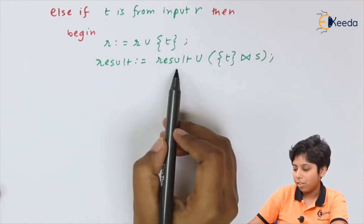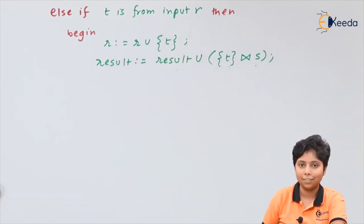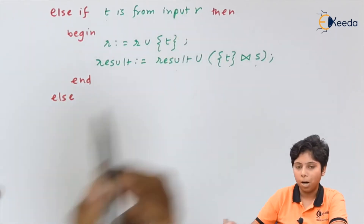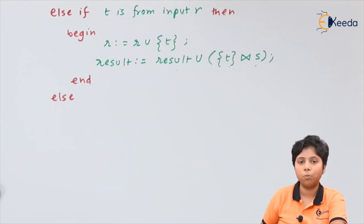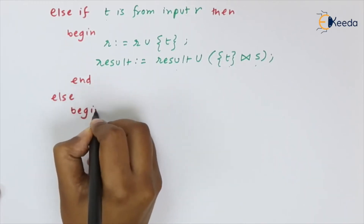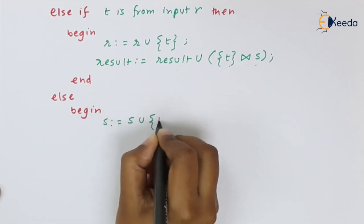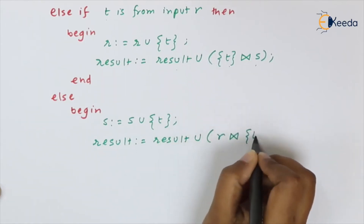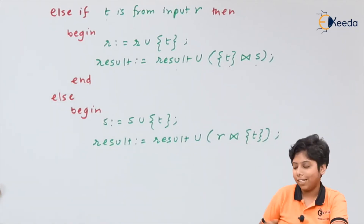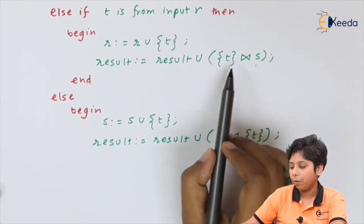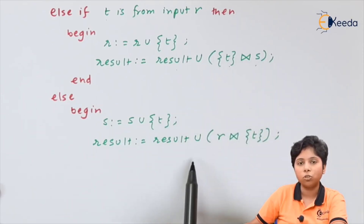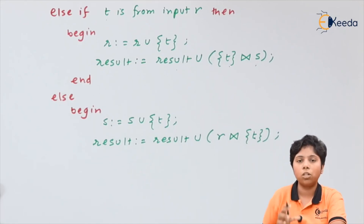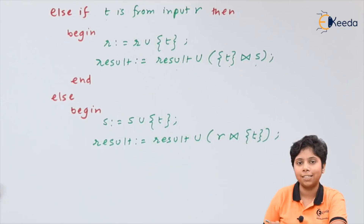The result is t belonging to r joined with s. If t is not the end of r, not the end of s, and not from r, then it is obviously from relation s, so we perform the same operation for s. In this case, since t belongs to s, the join is r joined with t. The final result always has r as the left relation and s as the right relation.